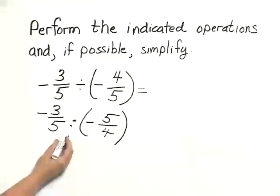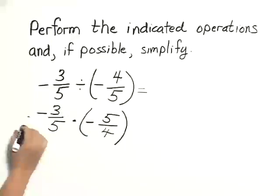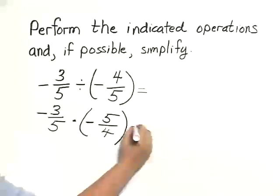Once we've rewritten this as a multiplication problem, we simply need to multiply as usual. A negative number times a negative number is a positive number.